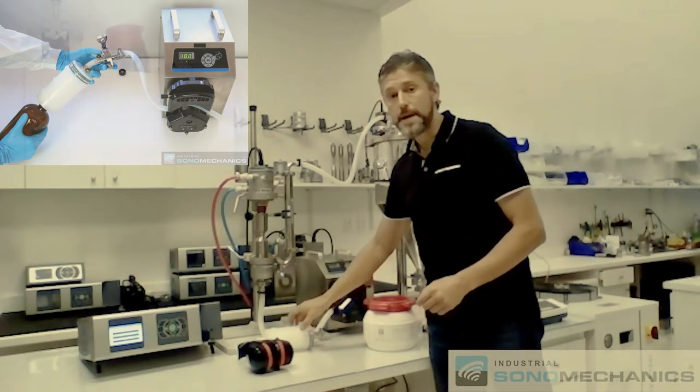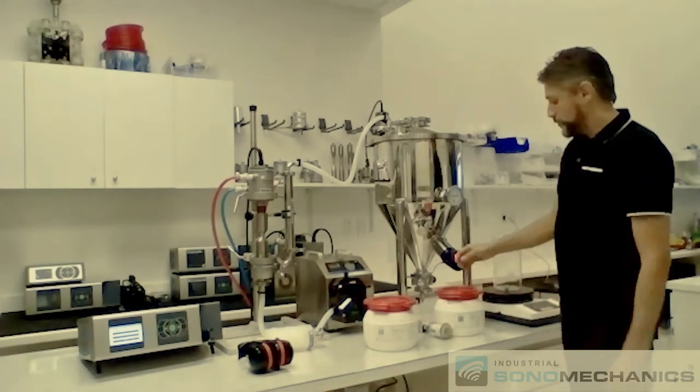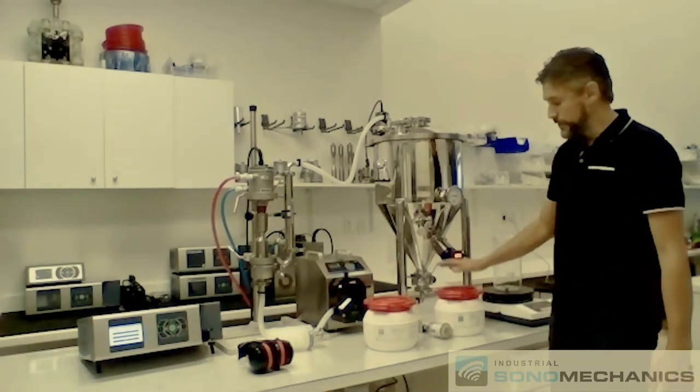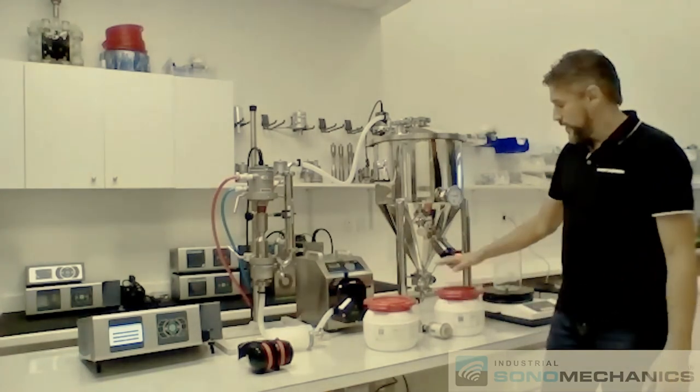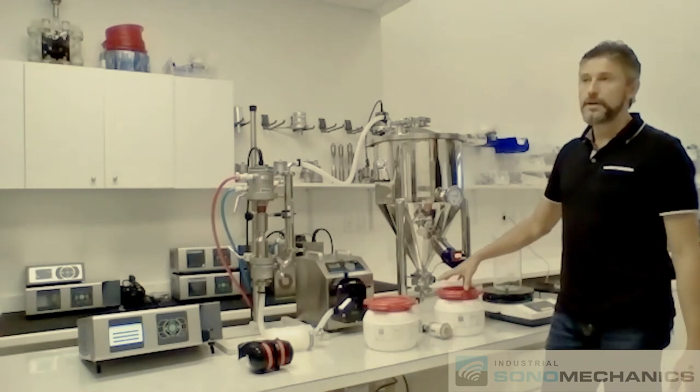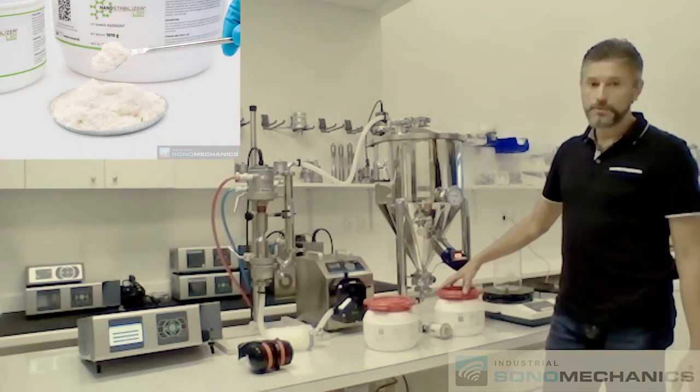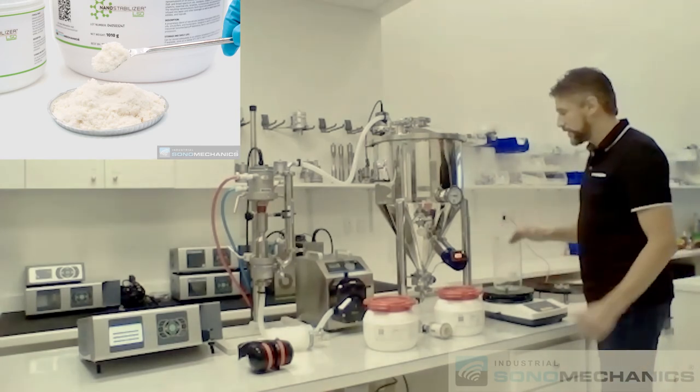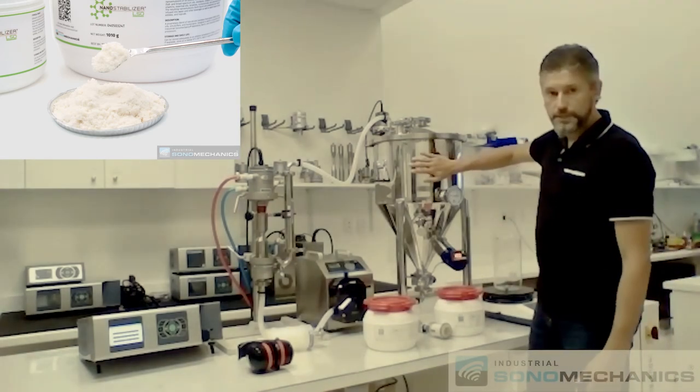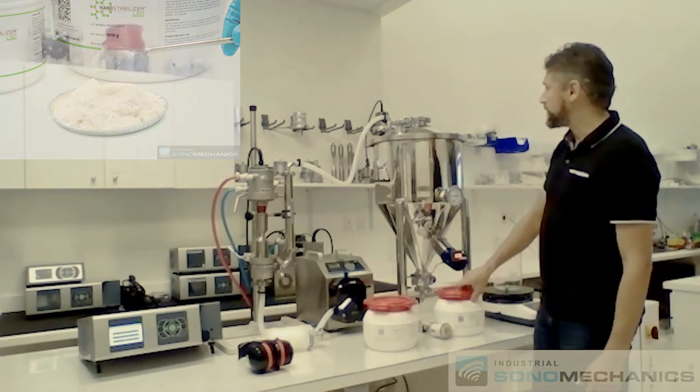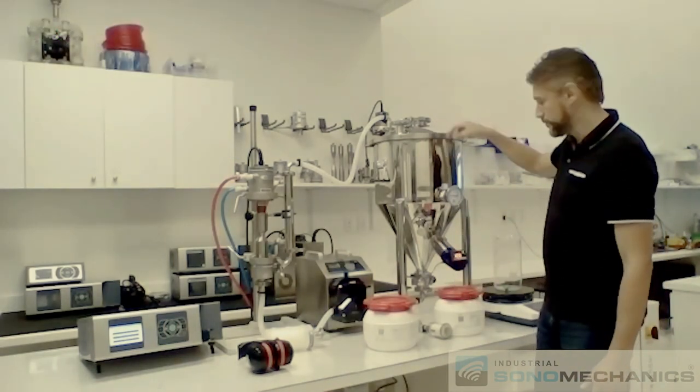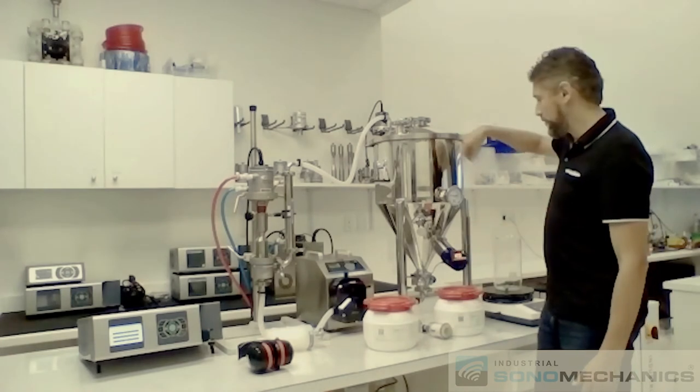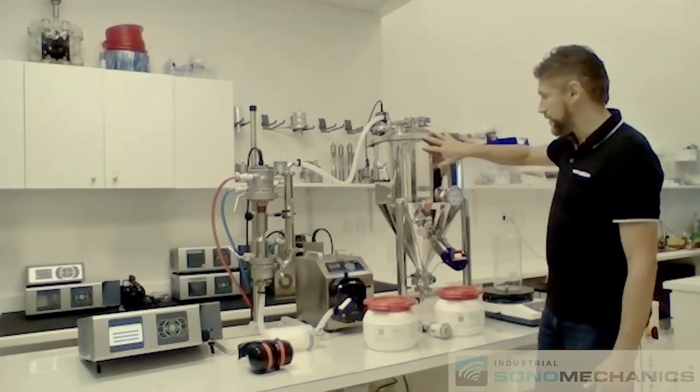Now, if you're making a powdered nanoemulsion, you will need a different type of nanostabilizer, nanostabilizer LSO. This is not a liquid. It's a powder. It will not melt. So we're not going to do any of this. We're not going to be pre-mixing. You have your water in this tank. After that, you place the appropriate amount of nanostabilizer LSO into this tank. The mixer will make sure that everything is homogeneously dispersed in there.